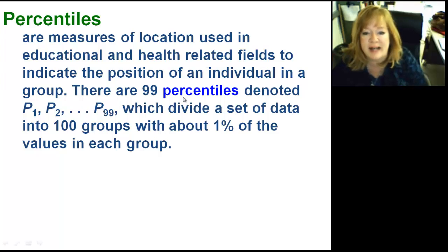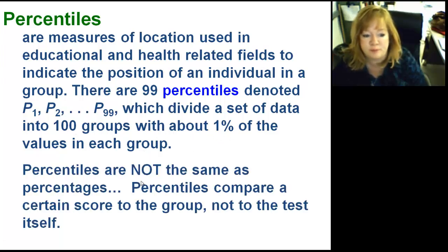They're 99 percentiles, denoted with p sub 1, p sub 2, all the way up to p sub 99. They divide the set of data into 100 groups with about 1% of the values in each group. Percentiles are not the same as percentages. I touched on this earlier.